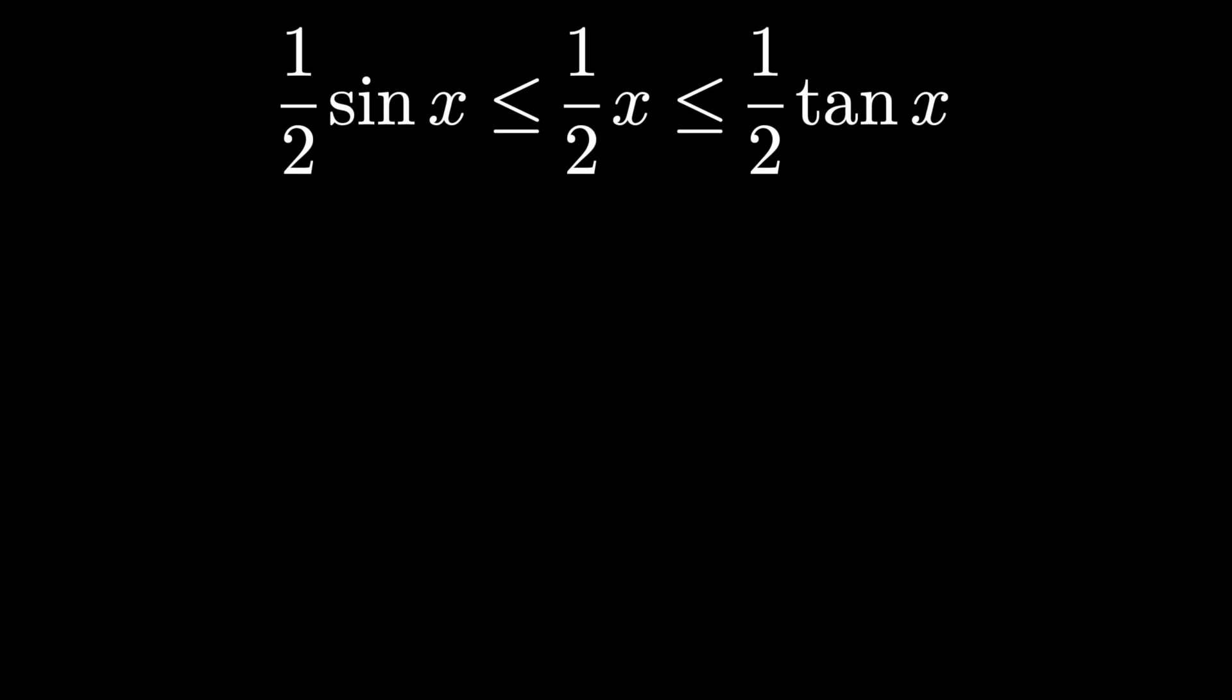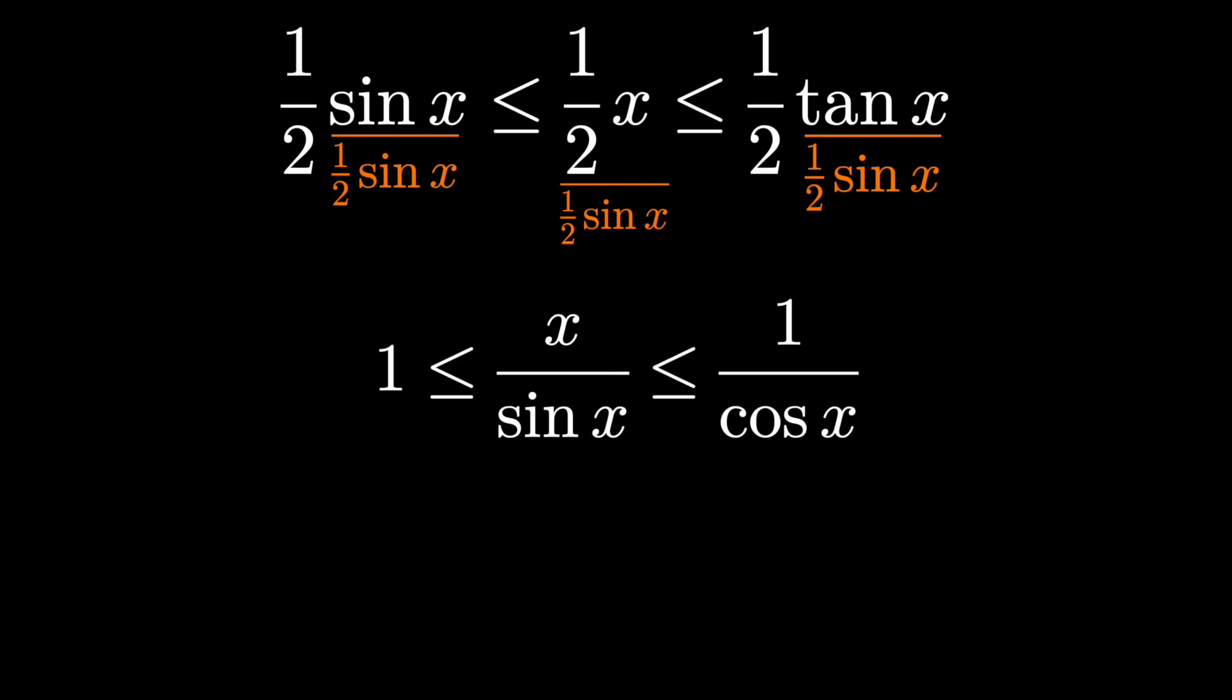We can simplify this a bit. Just divide everything by ½, and we'll also divide everything by sin X. And we'll make this look a little bit nicer by taking the reciprocal. That's also going to flip the direction of the inequality signs.